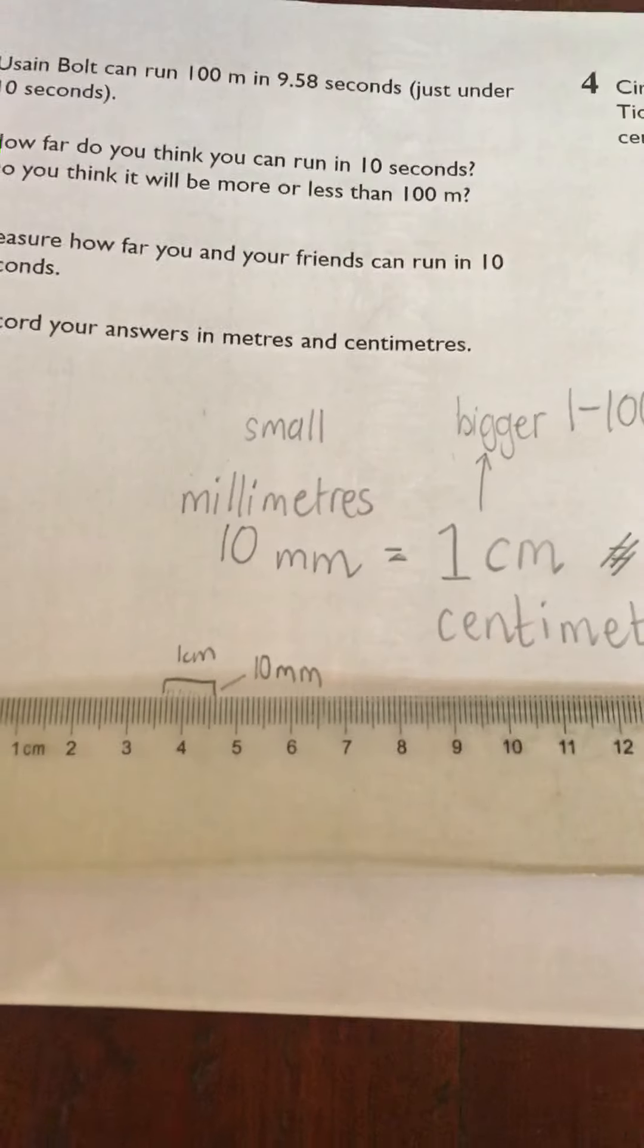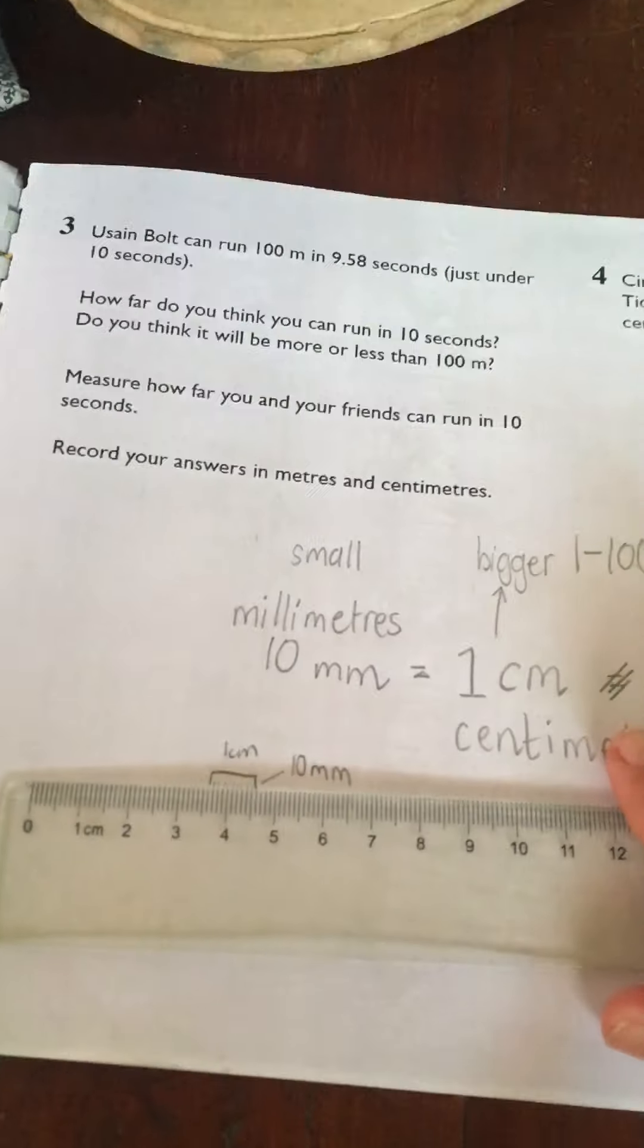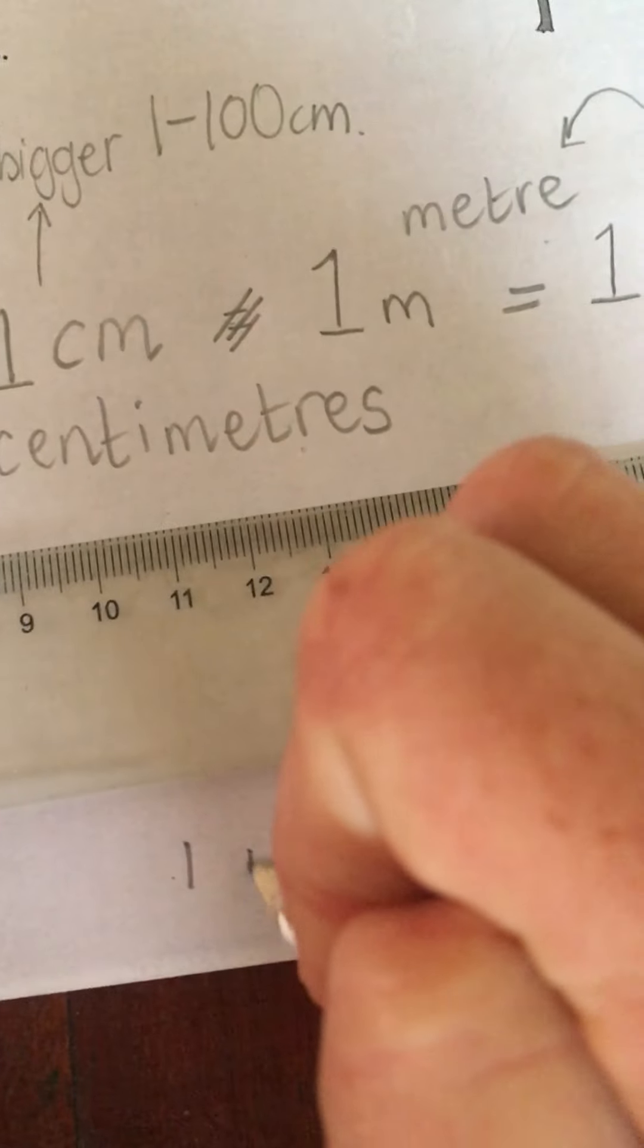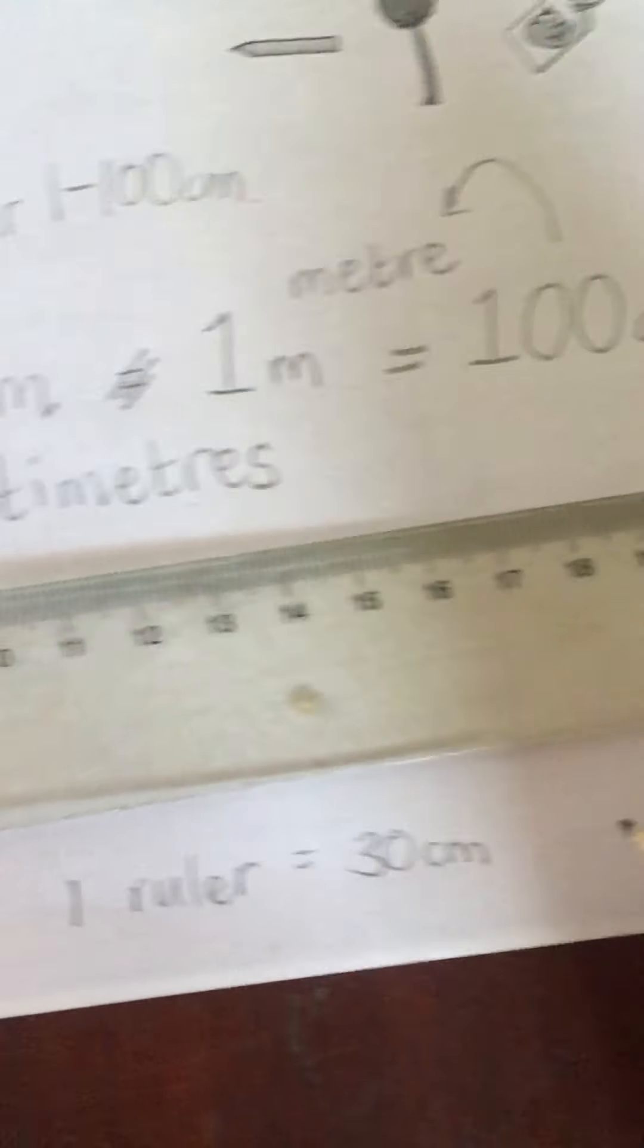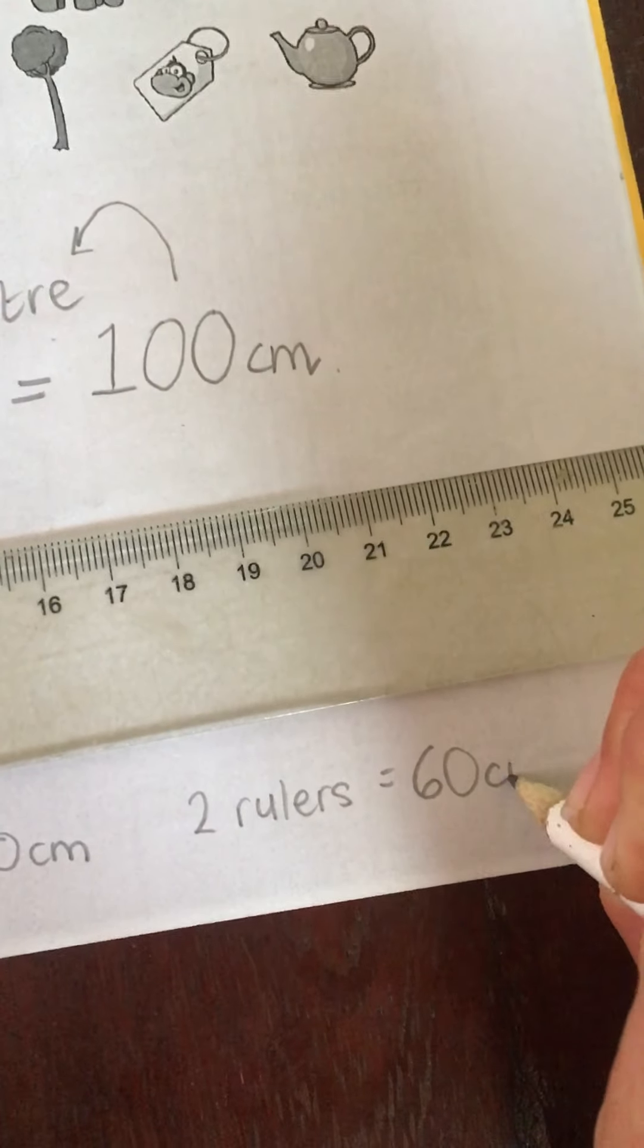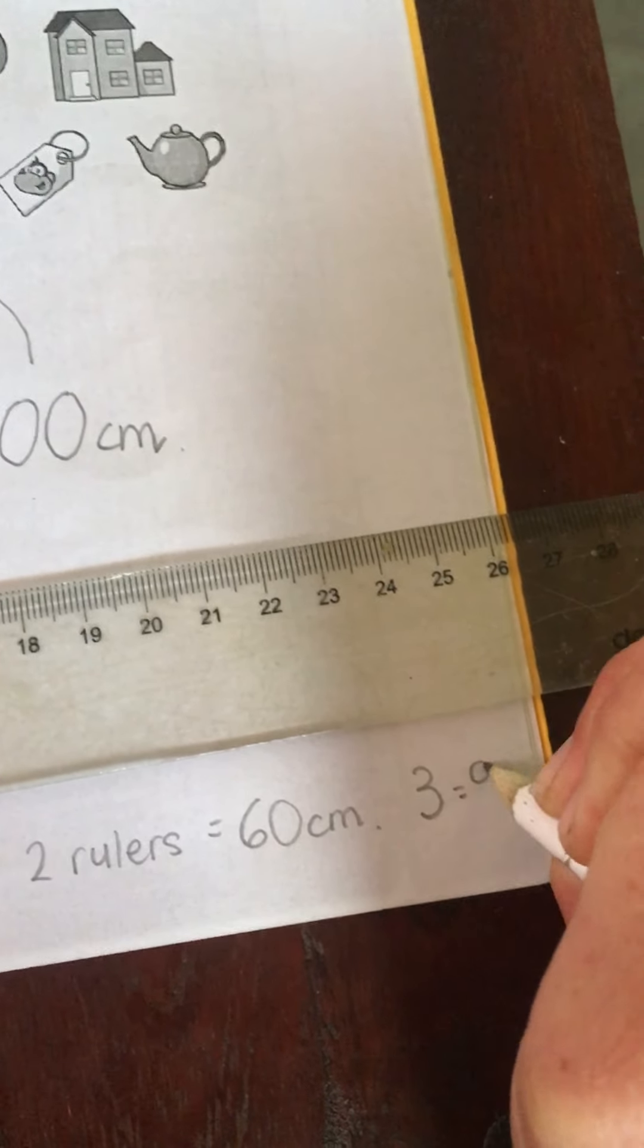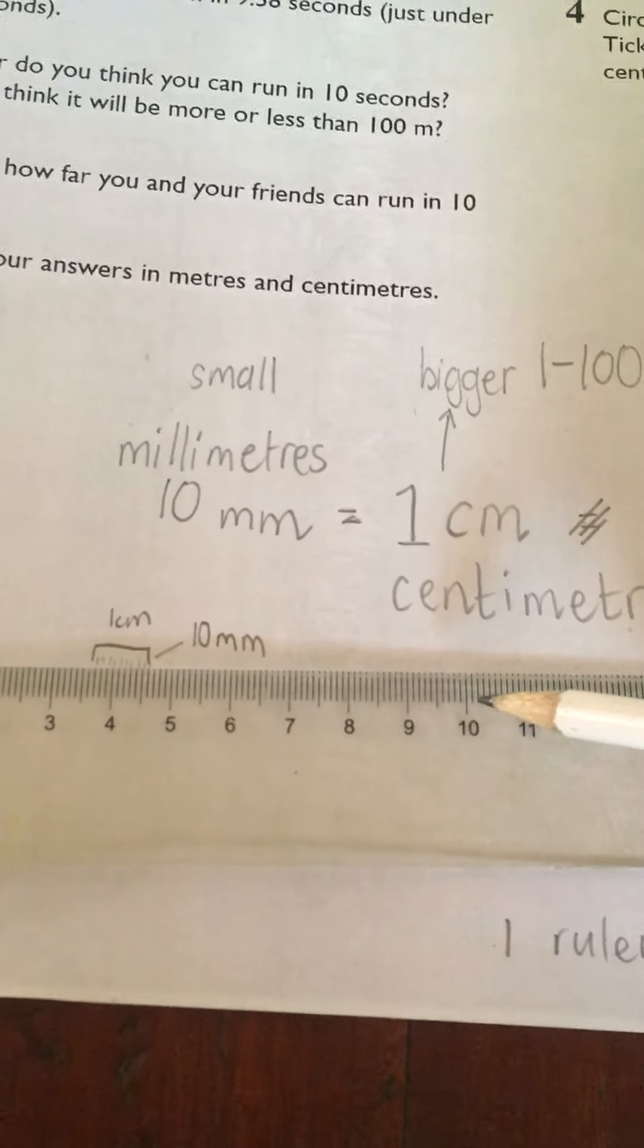If I take two rulers - if one ruler is 30 centimeters, then the length of two rulers would be 60 centimeters. Three rulers would be 90 centimeters, and after three rulers an extra 10 centimeters.